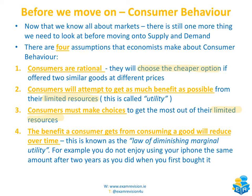The fourth assumption is that the benefit a consumer gets from consuming a good naturally reduces over time — this is called the law of diminishing marginal utility. An example here is that once you buy a new iPhone, you really enjoy using it at first, but two years later you don't enjoy using it as much because it has slowed down, maybe there's a crack on the screen, or a new iPhone has come onto the market. So over time, the amount of benefit or enjoyment you got from using that iPhone has diminished.